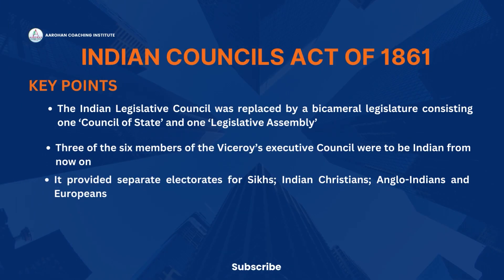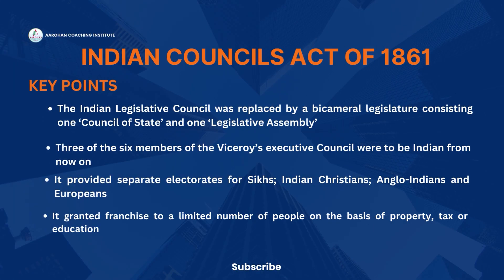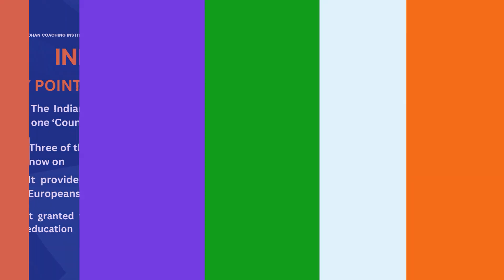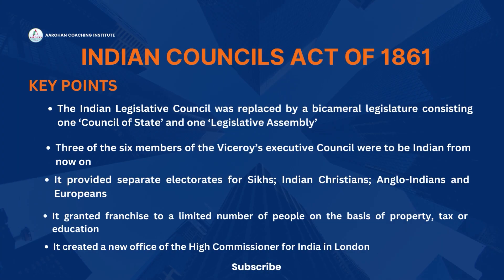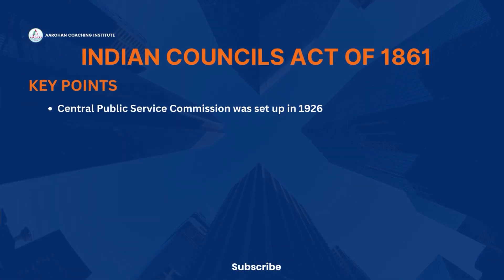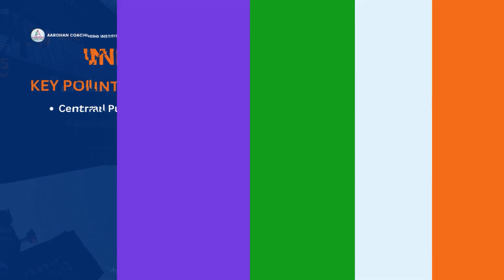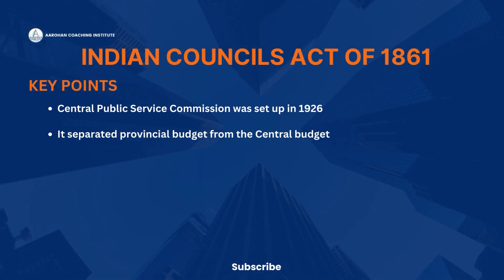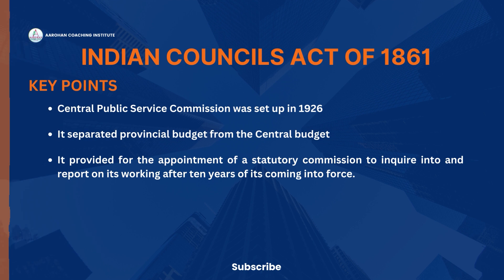It provided separate electorates for Sikhs, Indian Christians, Anglo-Indians, and Europeans. It granted franchise to a limited number of people on the basis of property, tax, or education. It created a new office of the High Commissioner for India in London. A Central Public Service Commission was set up in 1926. It separated provincial budgets from the central budget. It provided for the appointment of a statutory commission to inquire into and report on its working after ten years of its coming into force.